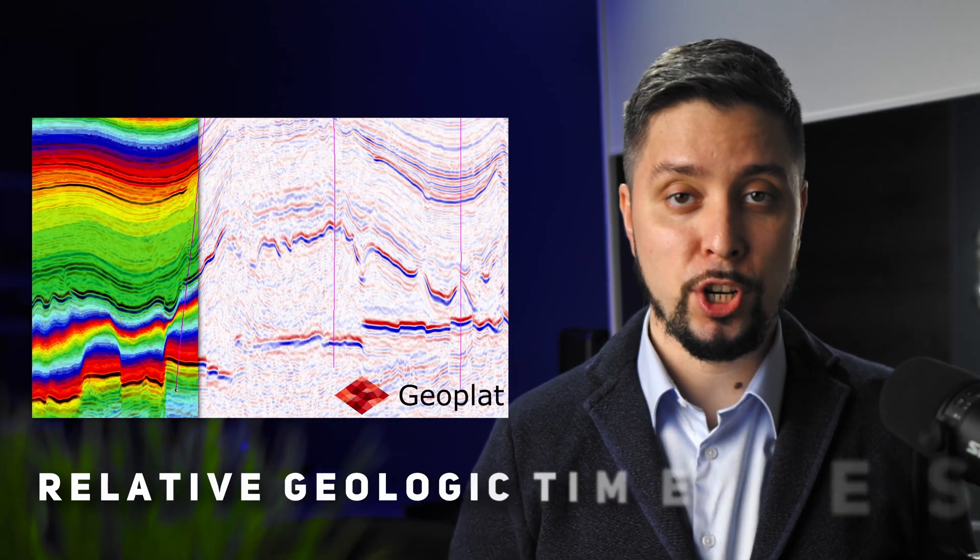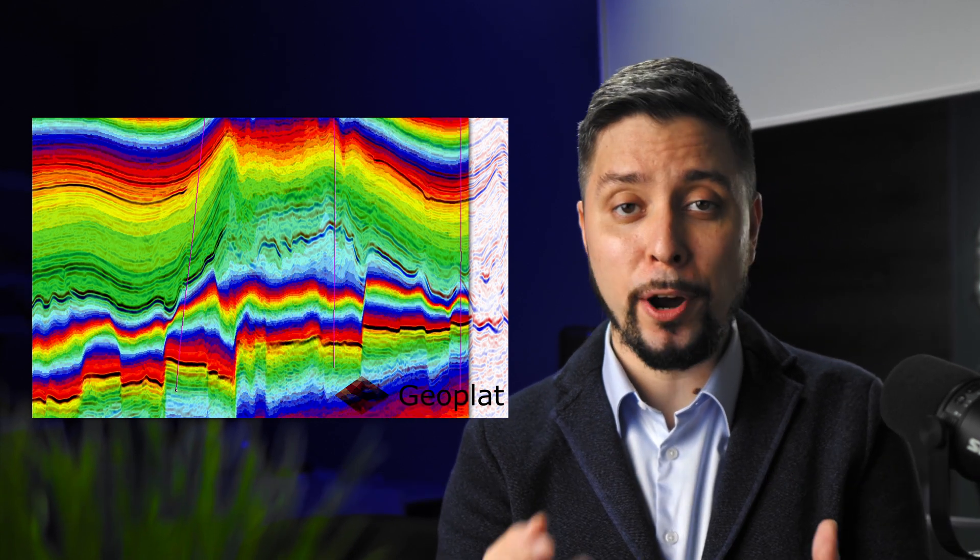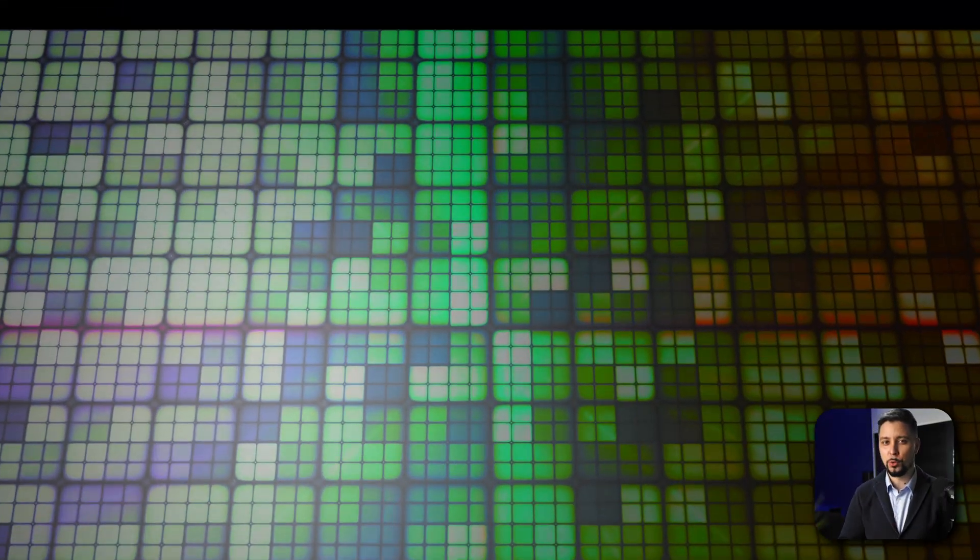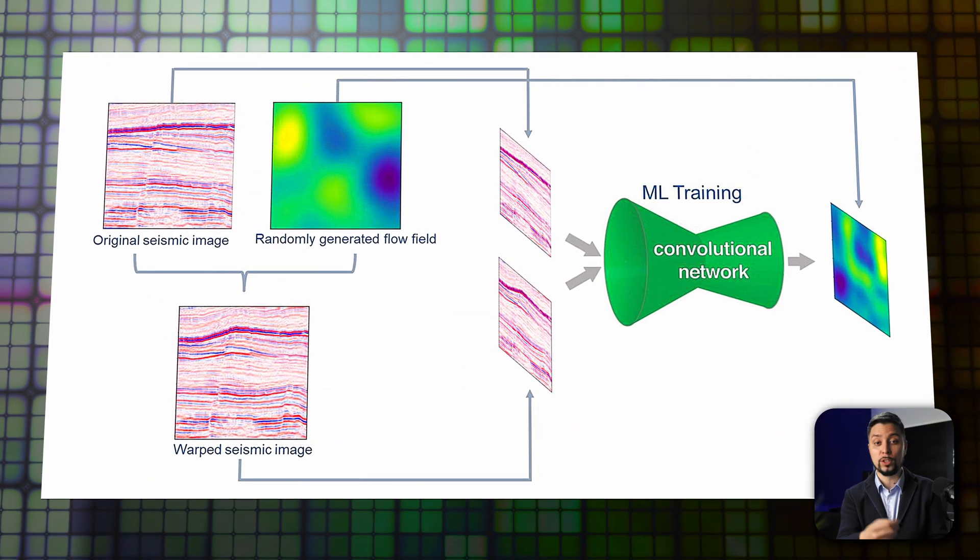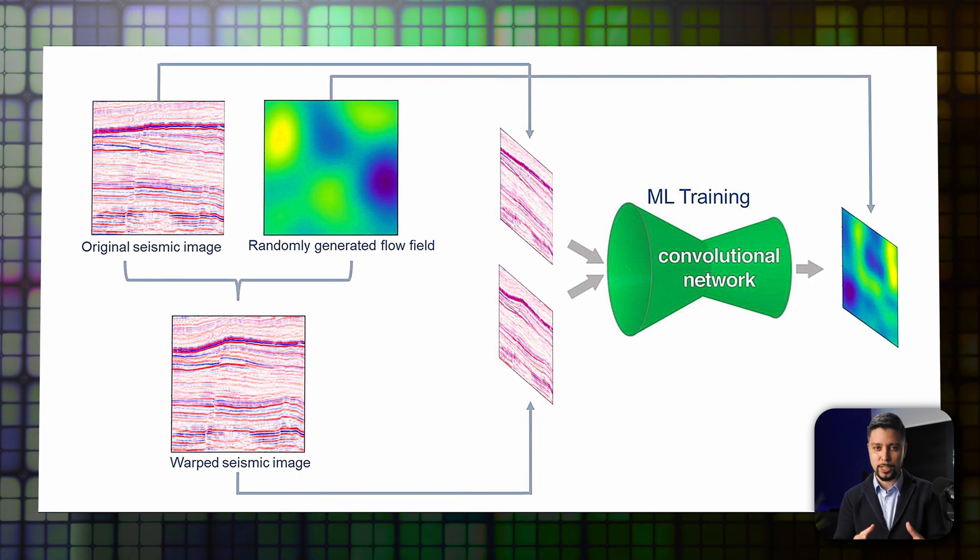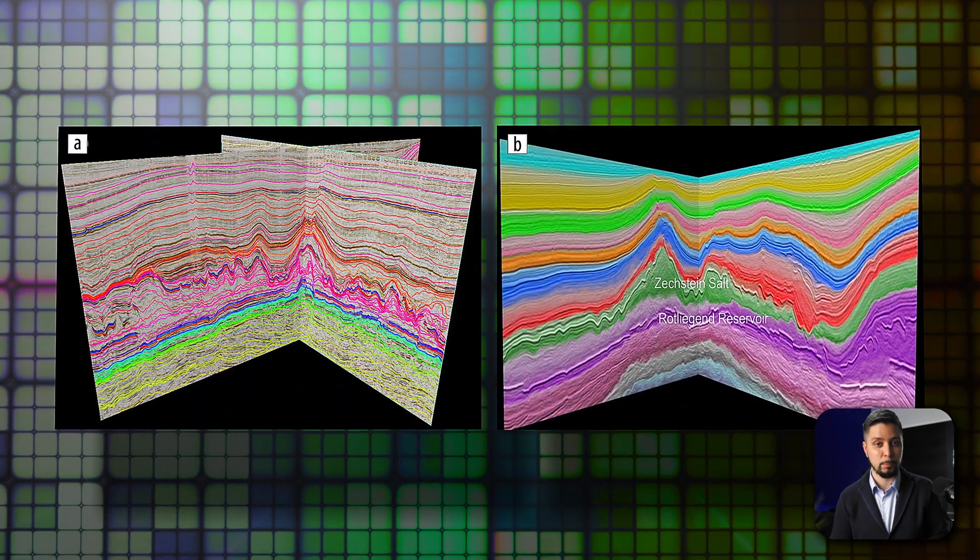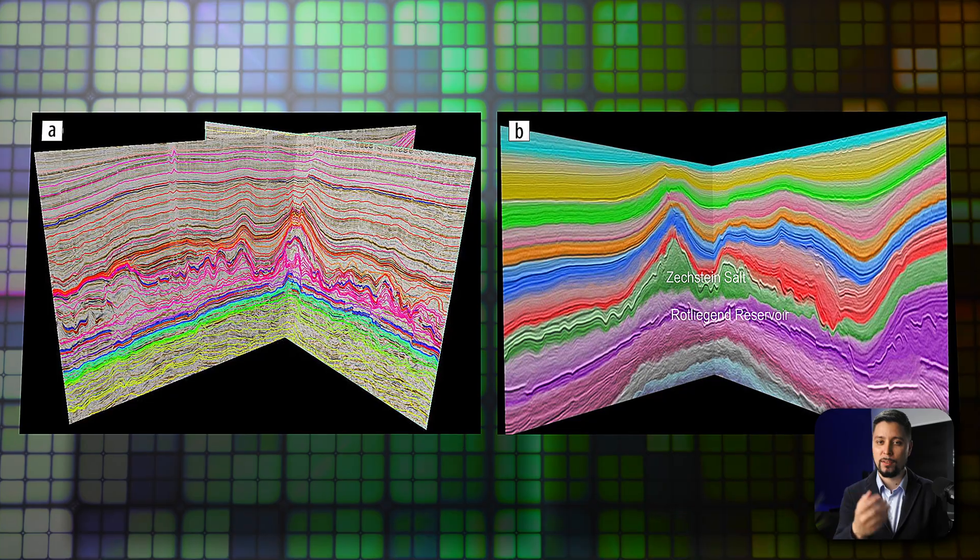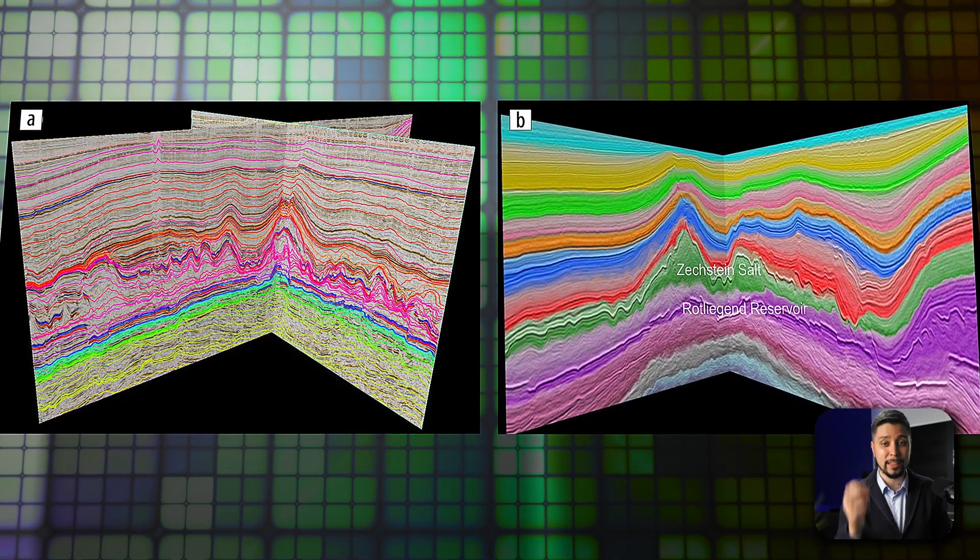Estimating relative geological time is another key part of this subsurface interpretation. It helps maintain spatial relationships and temporal order between the structures and stratigraphic units. The authors use a self-supervised workflow called SeismicFlowNet, which estimates the relative displacement between seismic sections without needing manual annotation.